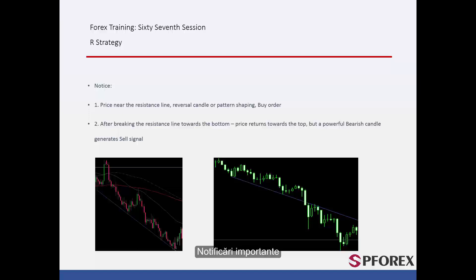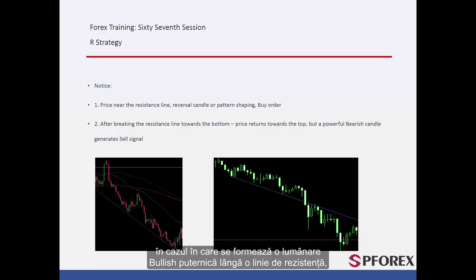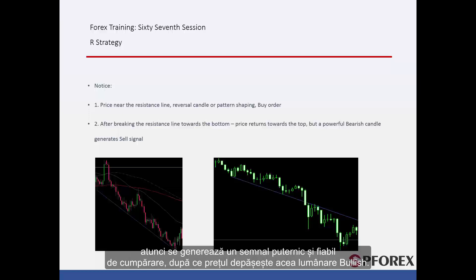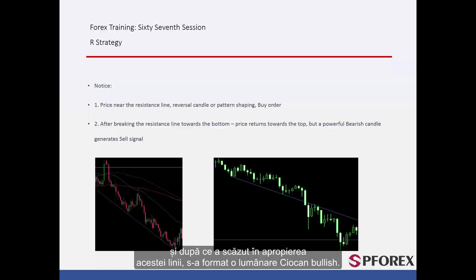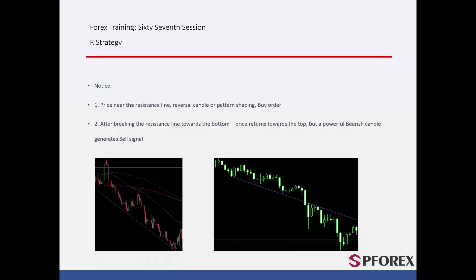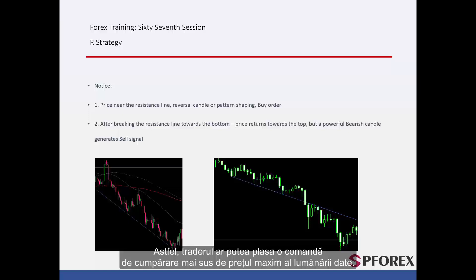Significant Notifications: When price declines towards the resistance line without crossing anything, if a powerful bullish candle forms near the resistance line, then a powerful and reliable buy signal is generated after price goes higher than that bullish candle. On the left graph, price could not cross the resistance line for a long time. After it fell near this line, a bullish hammer candle has formed; thus a trader could place a buy order above the high price of the given candle.